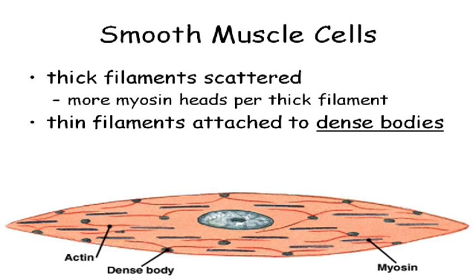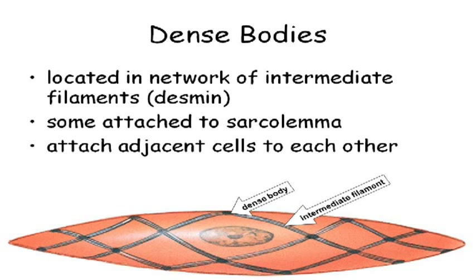In smooth muscle, you have myosin and actin — thick and thin filaments. The thin filaments, instead of being attached to Z-lines, are attached to what are called dense bodies. Those dense bodies are attached to intermediate filaments, forming almost like a mesh or net on the surface of the cell.